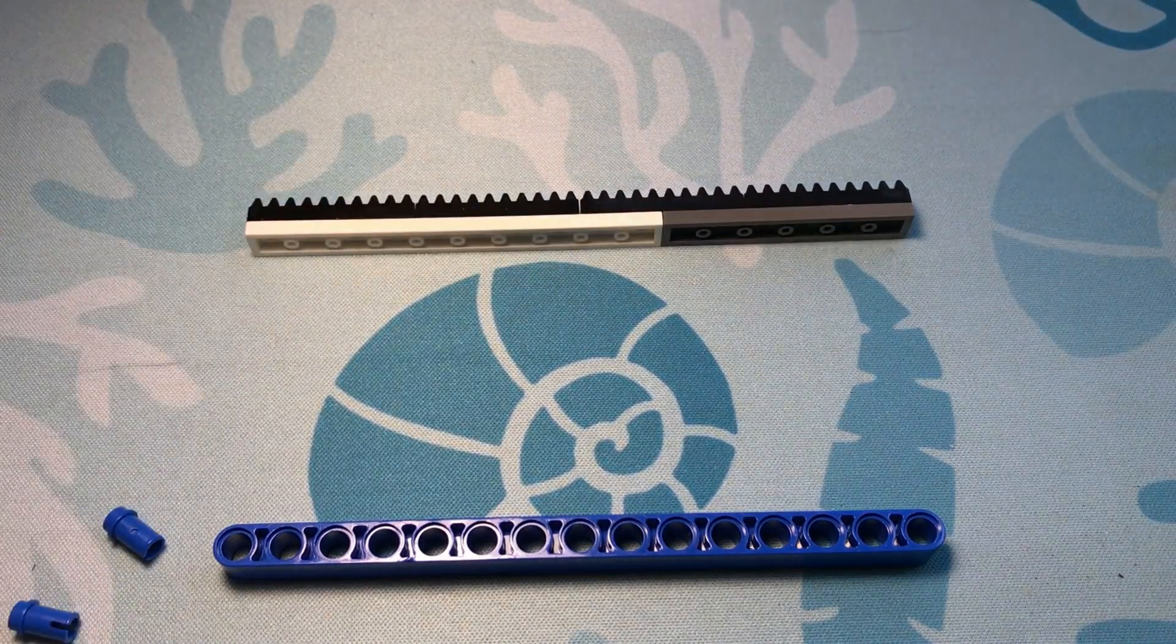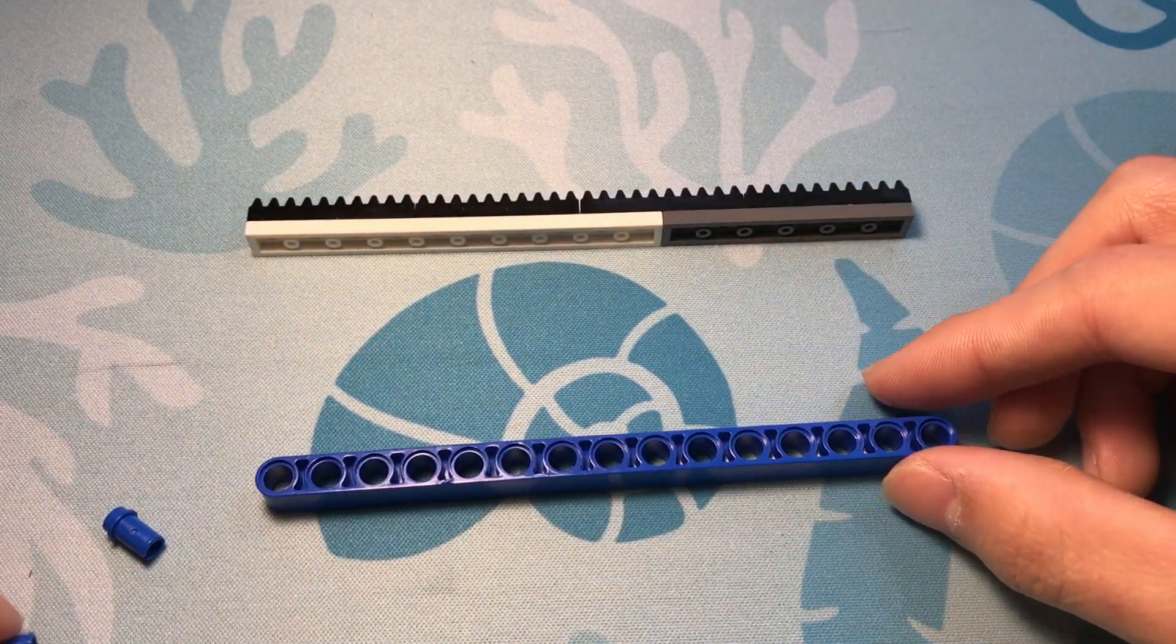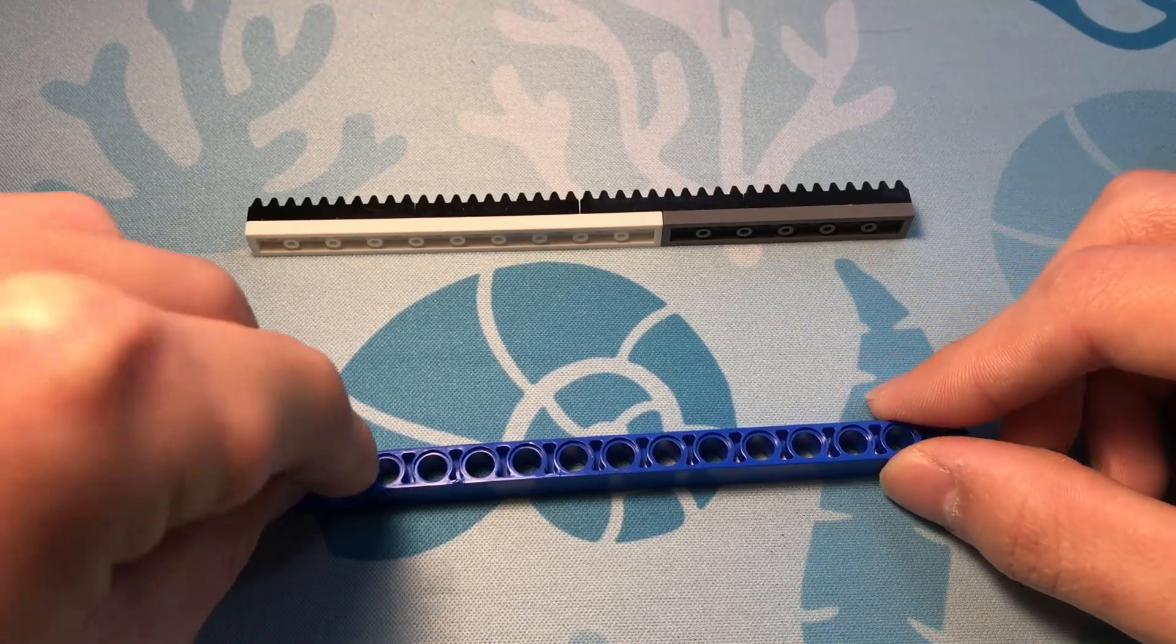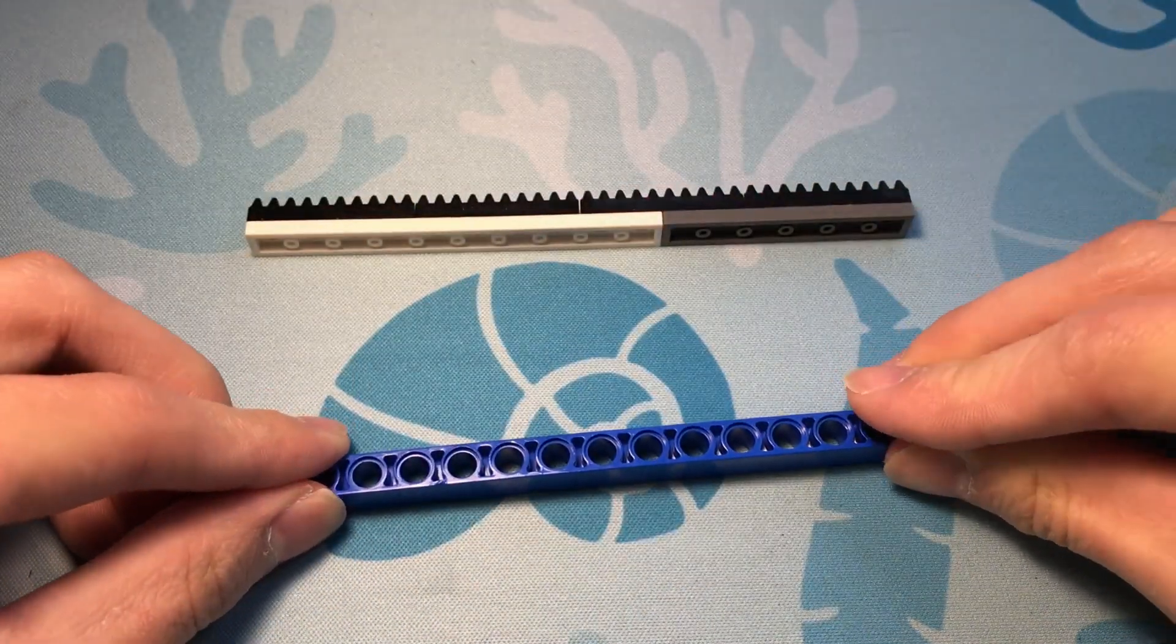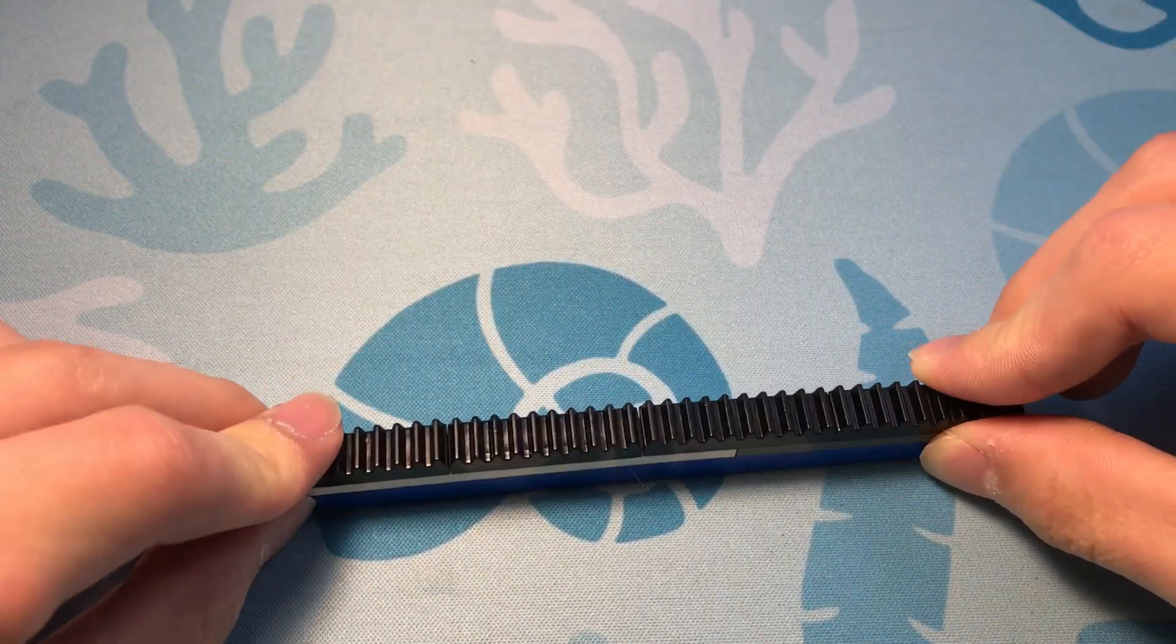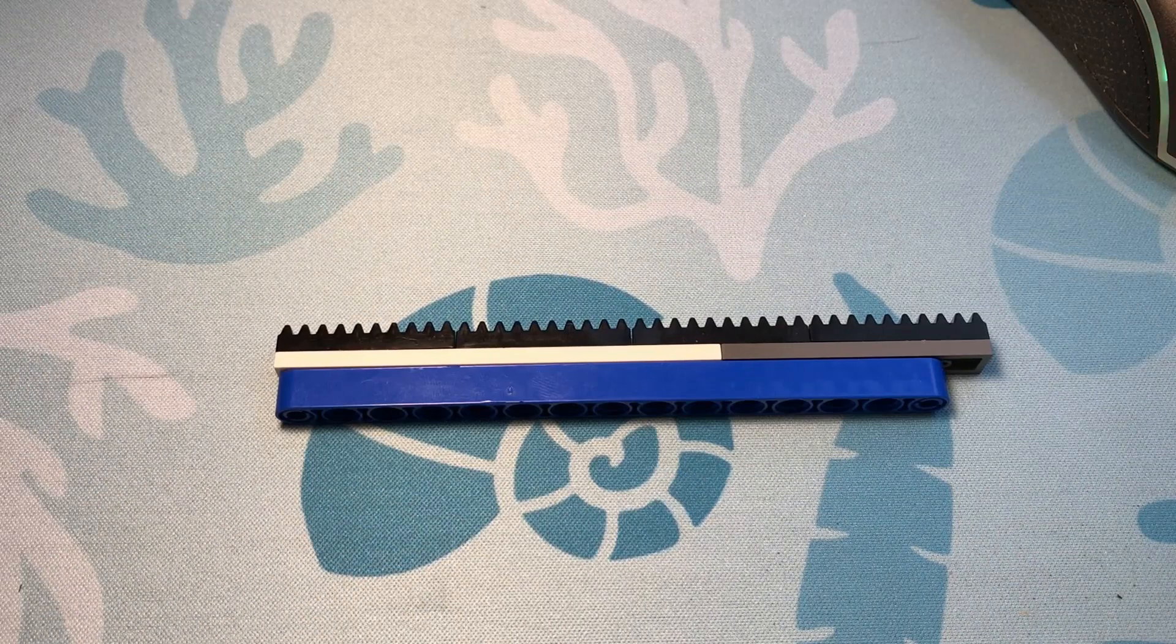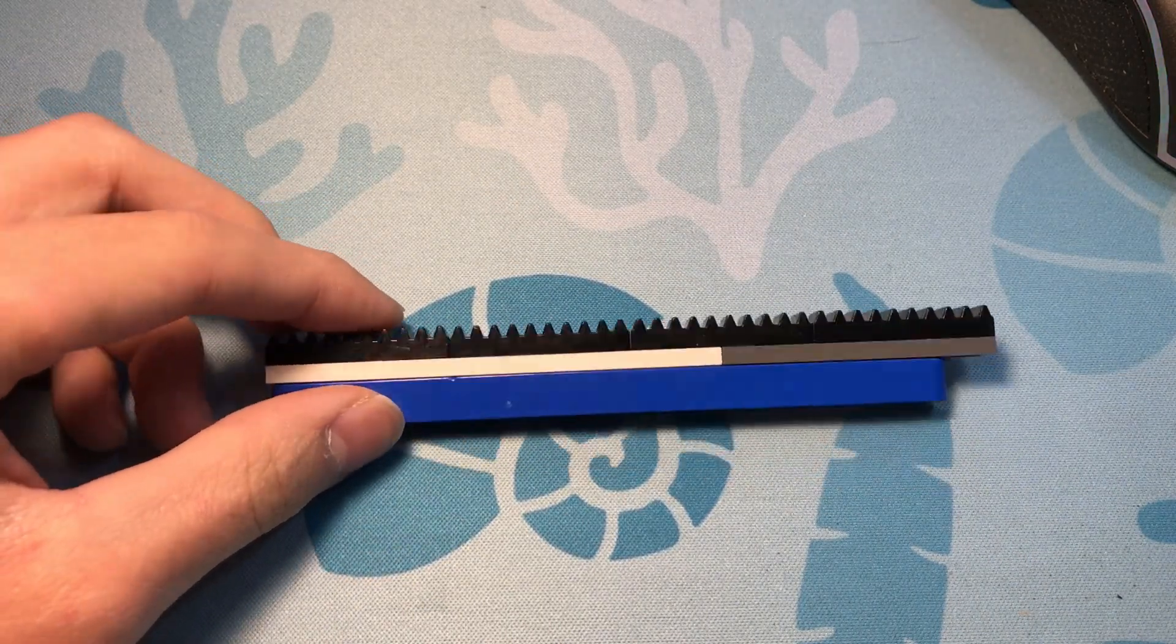And then we'll have to attach these plates to this beam. How we do that is we use these stud half pins and put them into this beam. Now we can connect this to the beam. But we're not done yet. We still have to make a housing for our rack so that it doesn't slide in ways we don't want it to.